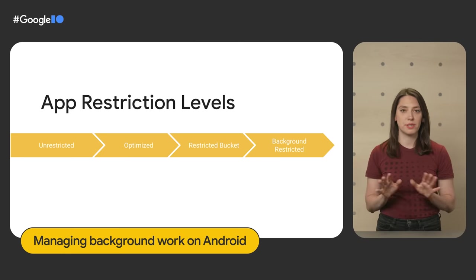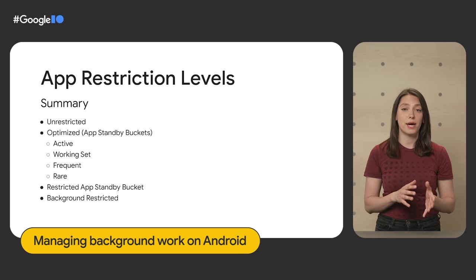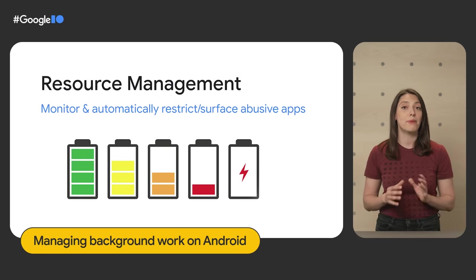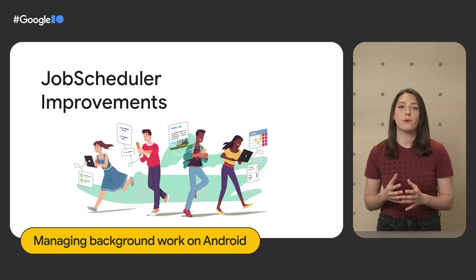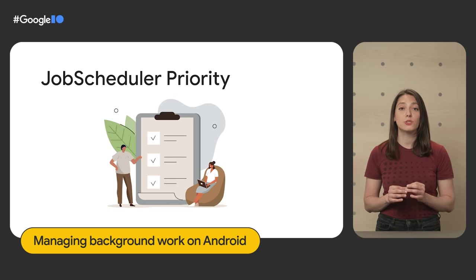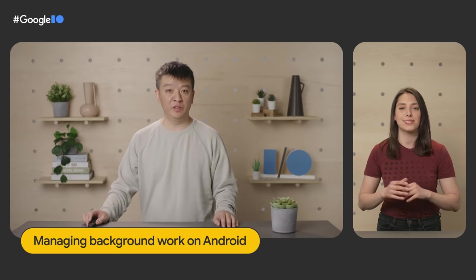We continue to balance powerful APIs for background work with preserving battery life. We've standardized background app restrictions, improving consistency across the ecosystem. Android 13 introduces new automatic and user-selected app restriction levels affecting how much background work apps can perform, and new background and alert battery thresholds that may notify users if apps consume too much battery. We've also improved job scheduler — making prefetched jobs run closer to the next estimated app launch and introducing job priority to kill lower-priority jobs when a device is in a critical state such as overheating or poor network connectivity.